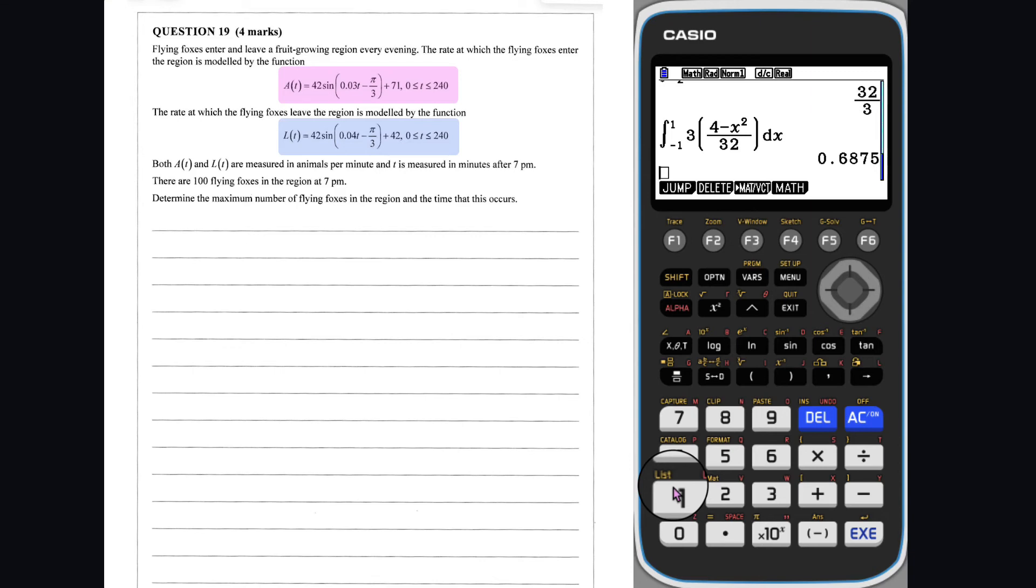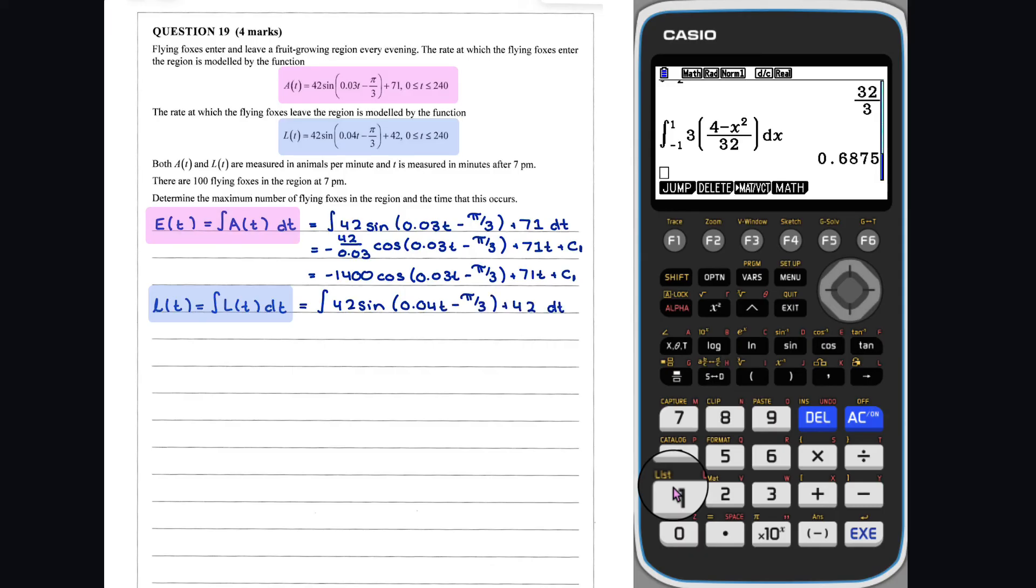Given that we know the rates at which the flying foxes come and go, the number of flying foxes entering by time t. And the number of flying foxes leaving by time t.